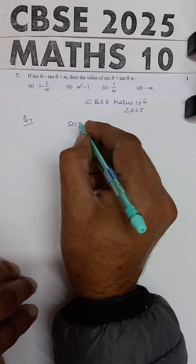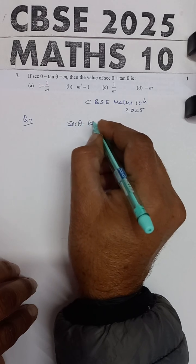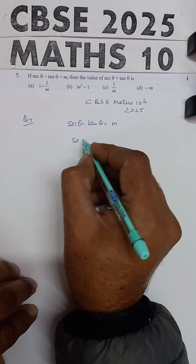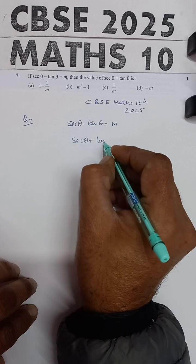Statement of the problem says, if sec theta minus tan theta equals M, then you have to find out the value of sec theta plus tan theta.